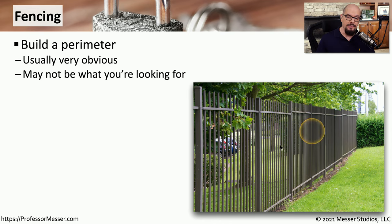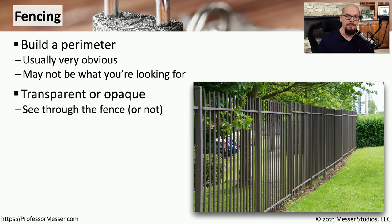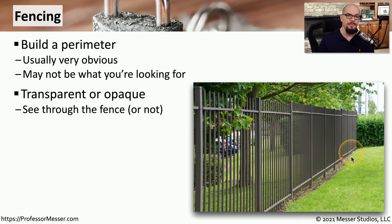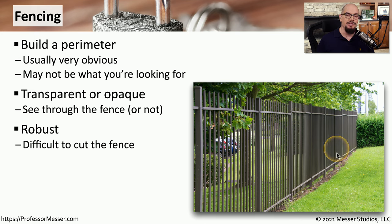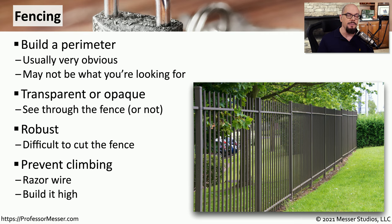Although fences are very good ways to prevent someone from gaining access to an area, they might also advertise that you have something there that you don't want people to access. You may have to use different types of fences depending on the security you need. If it's okay for people to see into a particular area, you may want a fence you can see through, which also means you can see out to see who may be on the other side. But if people shouldn't see what's on the inside, you may want an opaque fence. With the right kind of fence, you have a very solid security barrier that's difficult to cut through and tall enough to prevent climbing, especially if you add razor wire.